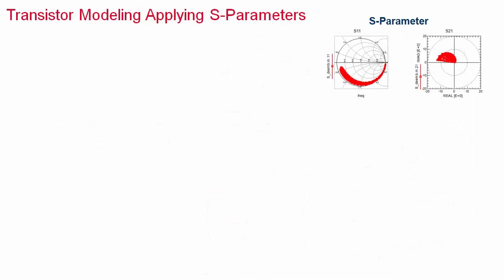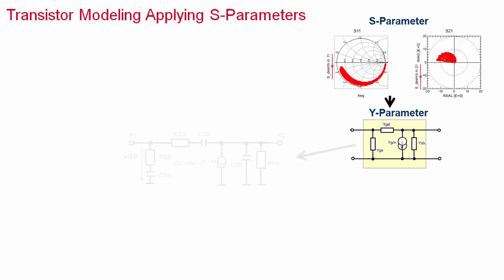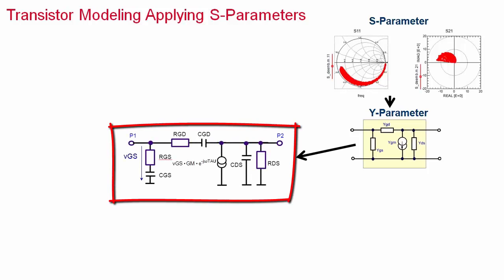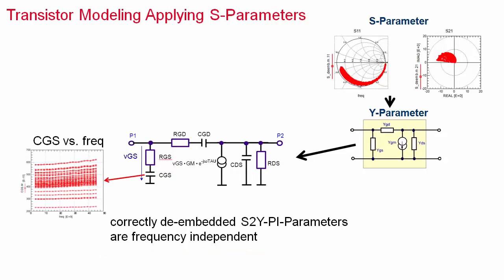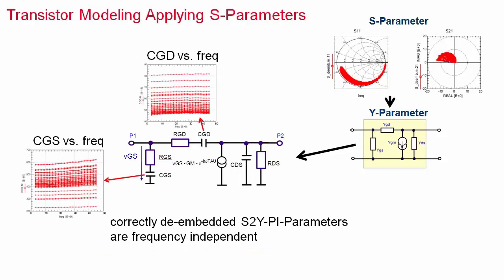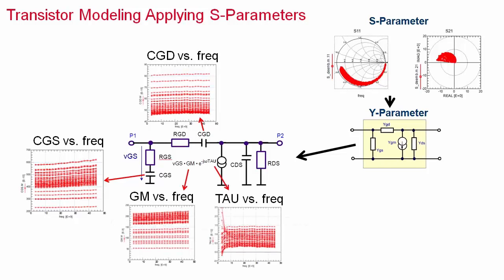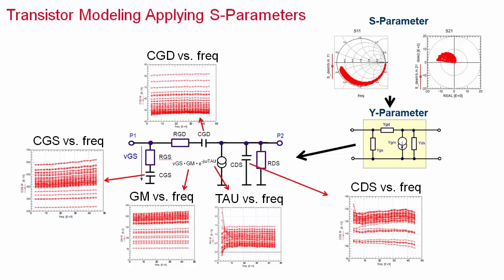Another best practice check of successfully calibrated and de-embedded transistor parameters is to convert the S-parameters to Y-parameters and then further to the MOSFET Pi schematic. If the S-parameters are okay, the components of this Pi schematic should be frequency-independent. This is true for the gate source capacitor, the gate drain capacitor, for both the transconductance GM and its delay time Tau, and also for the output capacitance.